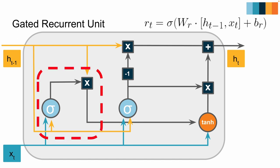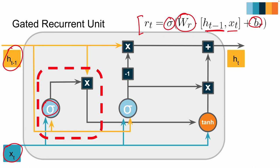Let's talk about the reset gate first. Like all gates in an LSTM, it takes in two values — the previous hidden state and the current input — combines them using weights and a bias, and sends them through a sigmoid activation function. The reset gate helps us determine how much of our proposed update to the hidden state should be based on the previous hidden state. Because sigmoid squishes values between 0 and 1, the output of the reset gate says what proportion of the hidden state we should remember. If the output is close to 0, the proposed update will have very little to do with the previous hidden state; if it's close to 1, the previous hidden state plays a big role.